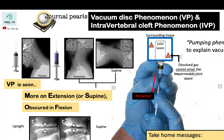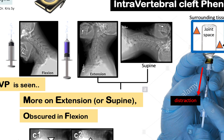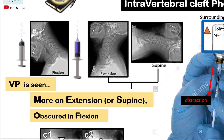Vacuum phenomenon is seen more on extension and supine views. This is the position when the paraspinal muscles are contracting and are providing the distraction forces on the vertebra. On the other hand, it is more obscured or may not be seen during flexion views.